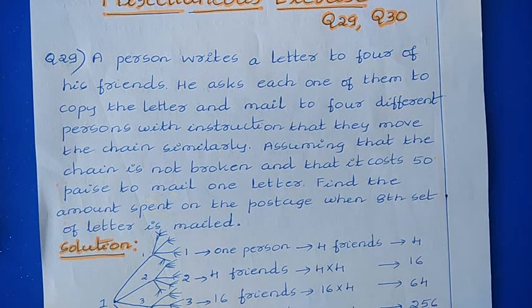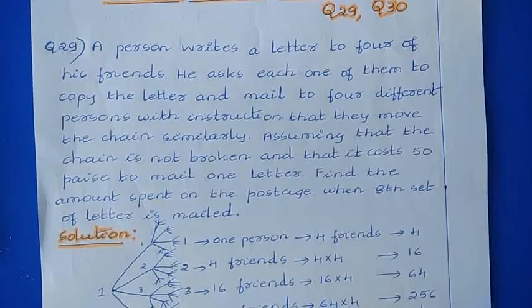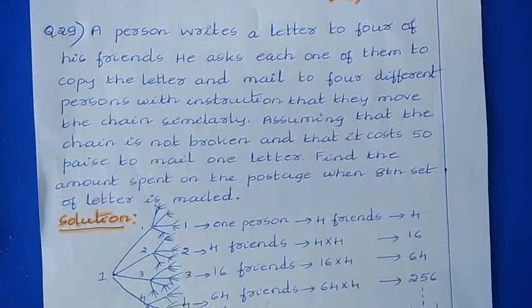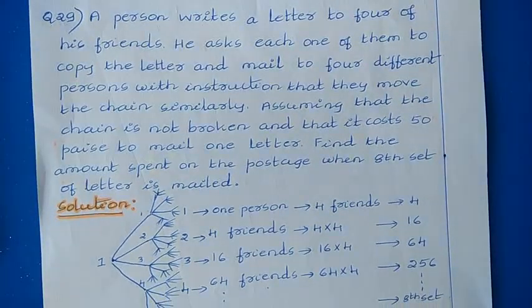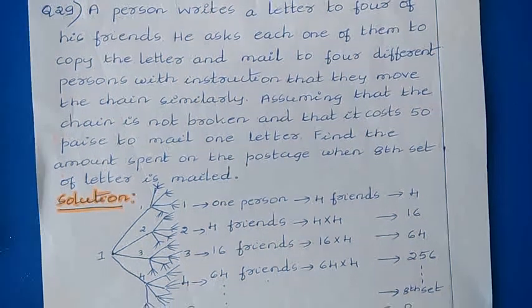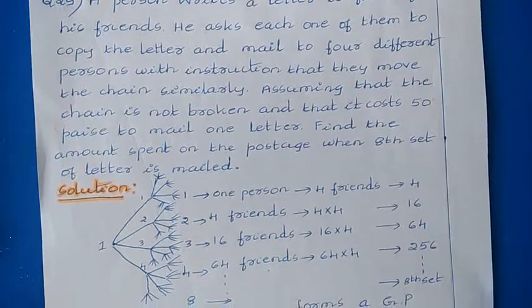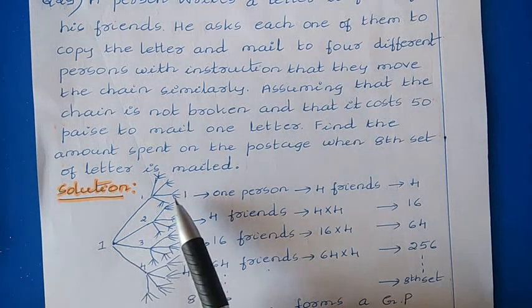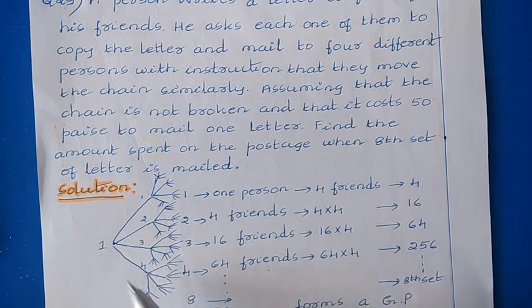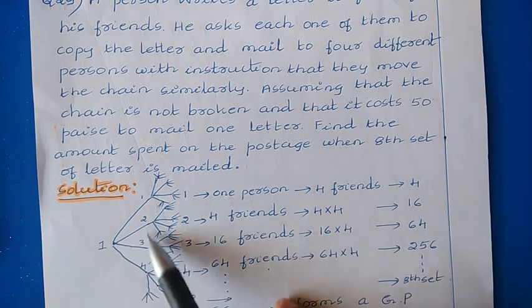Question No. 29. A person writes a letter to 4 of his friends. He asks each one of them to copy the letter and mail to 4 different persons with the instruction that they move the chain similarly. Assuming that the chain is not broken and that it costs 55 cents to mail one letter, find the amount spent on the postage when each set of letters is mailed. In this question, they have given that a person writes a letter to 4 of his friends. That means in the first set, there are 4 letters.